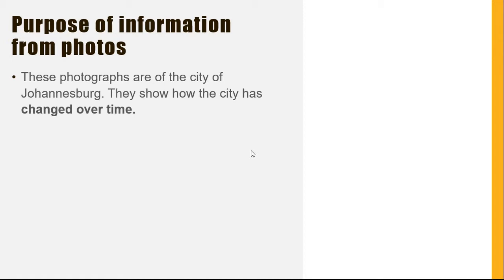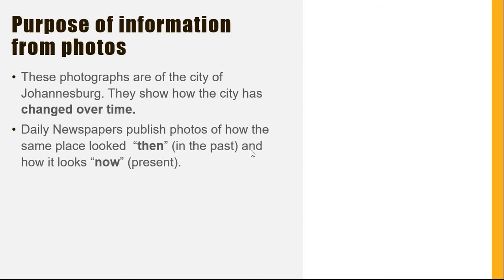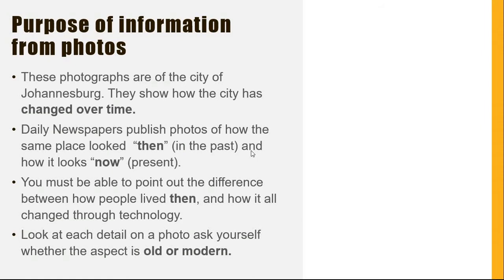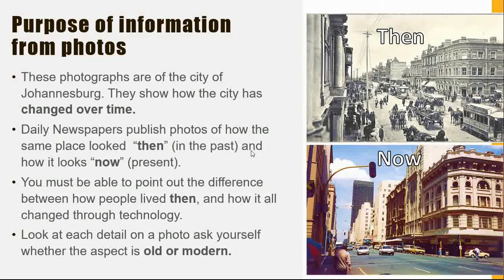Let's examine the purpose of information from photos. These photographs are of the city of Johannesburg and show how the city has changed over time. Daily newspapers publish photos of how the same place looked then, in the past, and how it looks now, in the present. You must be able to point out the difference between how people lived then and how it all changed through technology. Look at each detail on a photo and ask yourself whether the aspect is old or modern. Here are photos of Pretoria in the past and the present.